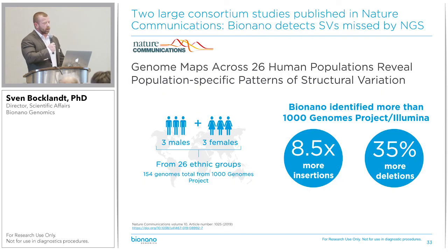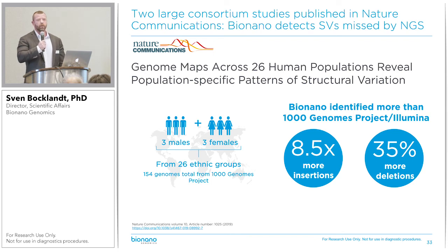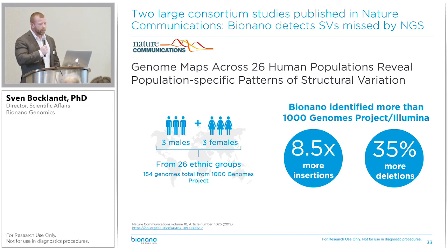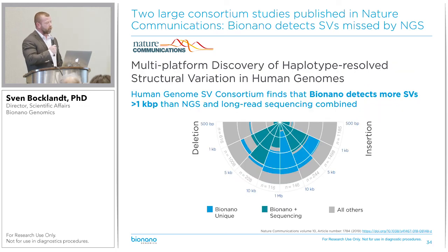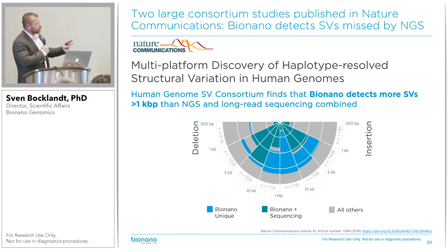A paper in Nature Communications from earlier this year showed that in 154 human genomes from the Thousand Genomes Project, we called eight and a half times more insertions than with Illumina — you just don't see insertions with short reads, but we do, and we tell you exactly where they are. In a comparison with long-read sequencing, a paper from the Human Genome SV Consortium shows that large structural variants — both insertions and deletions — are almost exclusively picked up by BioNano, specifically these large insertions. So if you don't use BioNano, you're missing out on all of these structural variants.